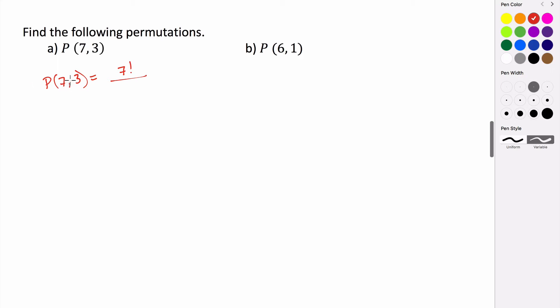And then in the denominator you take their difference, 7 minus 3 factorial. So this ends up being 7 factorial over 4 factorial.